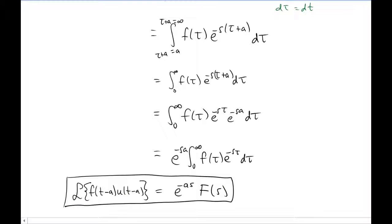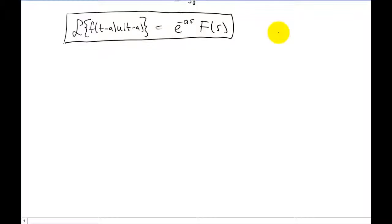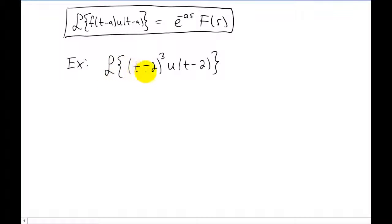Let's do a quick example on how to actually use this new formula we have. Let's start by finding the Laplace transform of t minus two quantity cubed times the step function with the t minus two in there. Now obviously since we have a step function times another function right here, this is going to be the entry in the Laplace transform table that we're going to end up using.